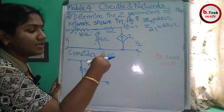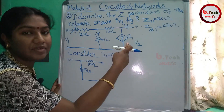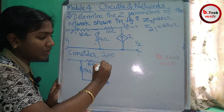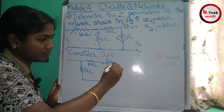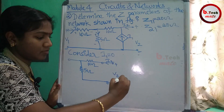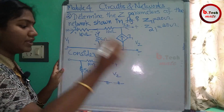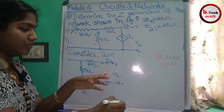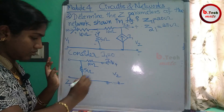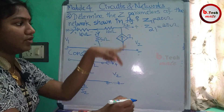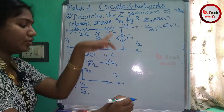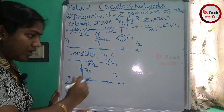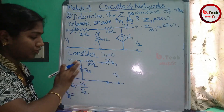Now we have a dependent source. If you have a dependent source, you can open the current source — it will open the port again. We place a test current I2 at the output port. We find Z22 equals V2 divided by I2. The circuit has 5 ohm and 10 ohm resistors. With I1 equal to 0, the dependent source is zero.